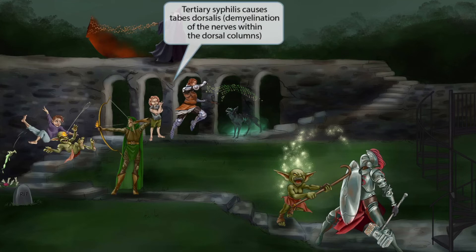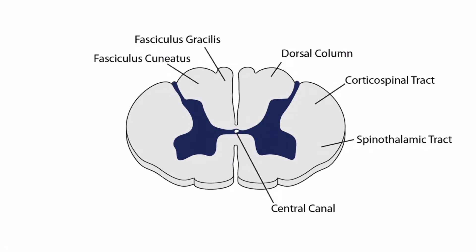The columns suspending the third floor are cracked. The columns represent the dorsal columns, so their damage helps you remember that the dorsal columns may be damaged in tertiary syphilis — a condition known as tabes dorsalis. This occurs because nerves within the dorsal columns become demyelinated as the infection invades the CNS. In a cross-section of the spinal cord, the dorsal columns are the posterior aspects, conveying proprioception and vibration. A patient with tabes dorsalis may therefore present with abnormal proprioception and vibration.